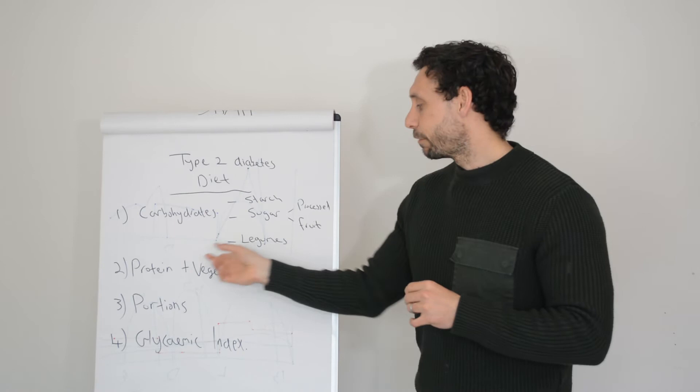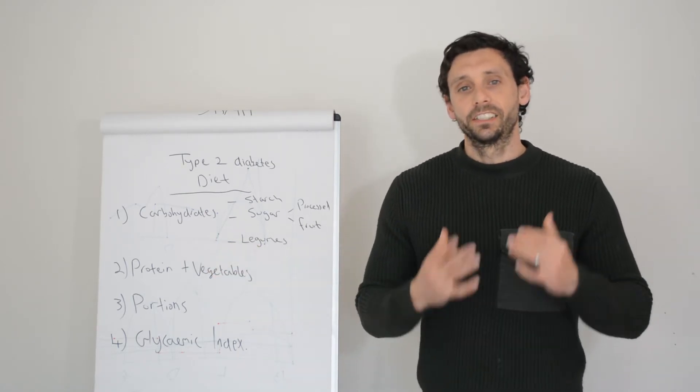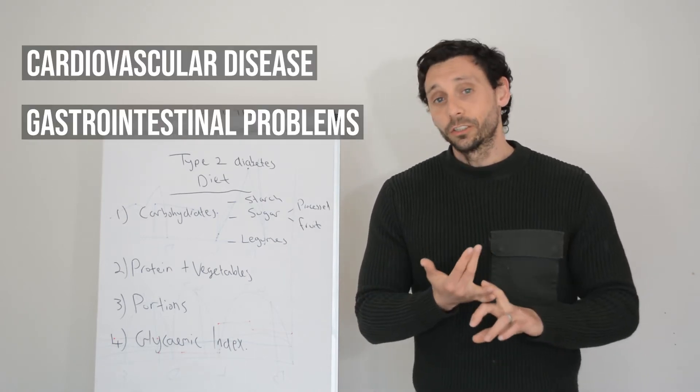Then having lots of vegetables and salads. Ideally this will be half of the plate. This helps to reduce your risk of things like cardiovascular disease, gastrointestinal problems, obesity. The list goes on and on.